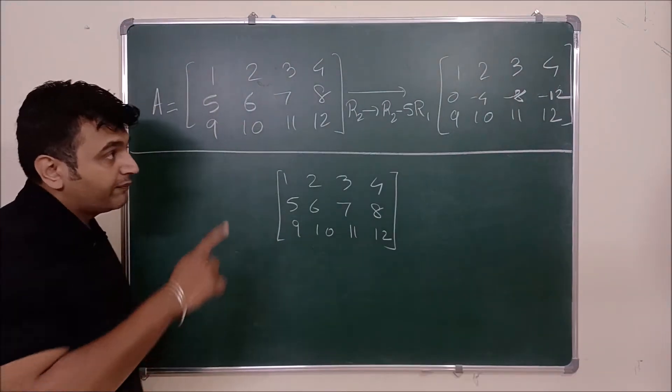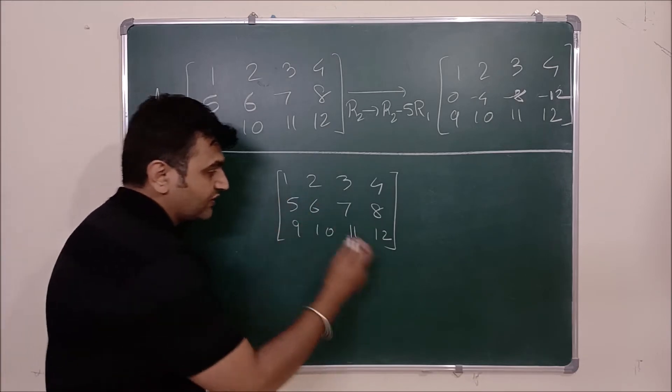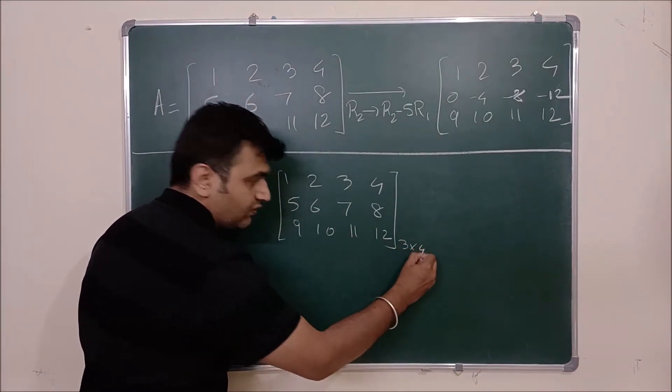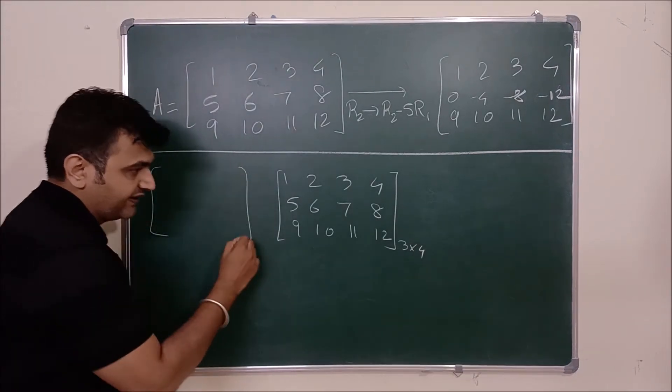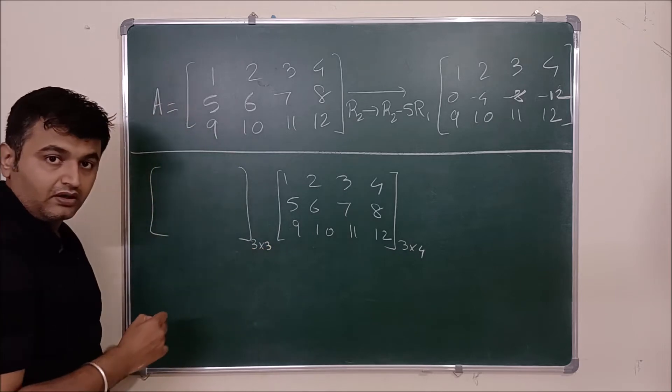So what to do is you apply this operation on the identity matrix. Now here this is what is the order. This is a 3 cross 4. I will pre-multiply this with a matrix. Now this is 3. So I will take 3 cross 3.